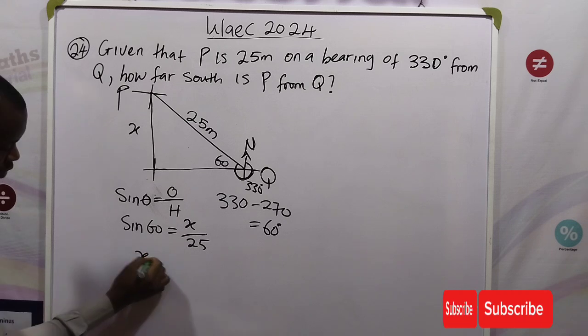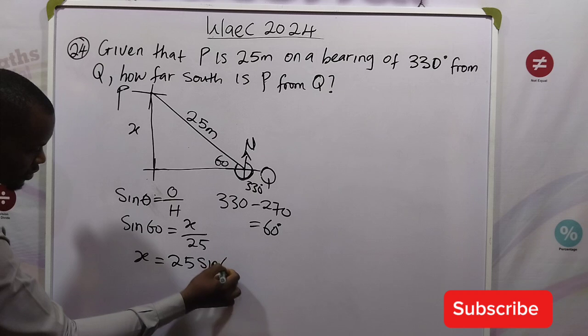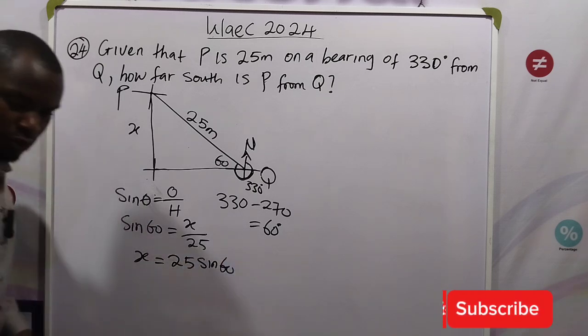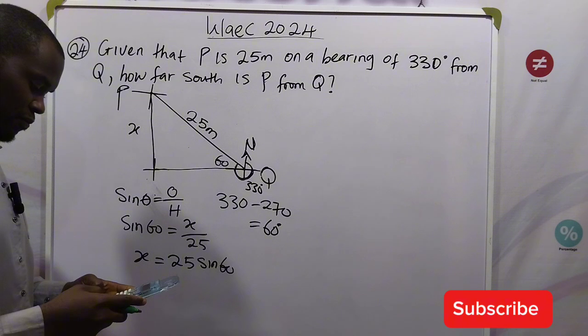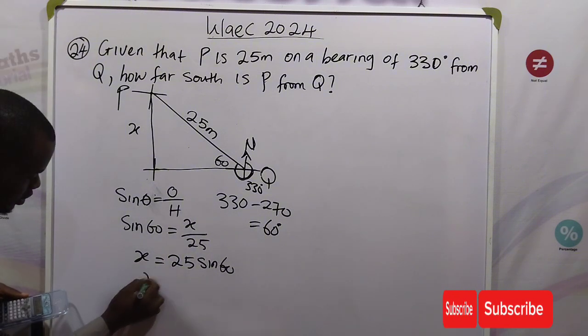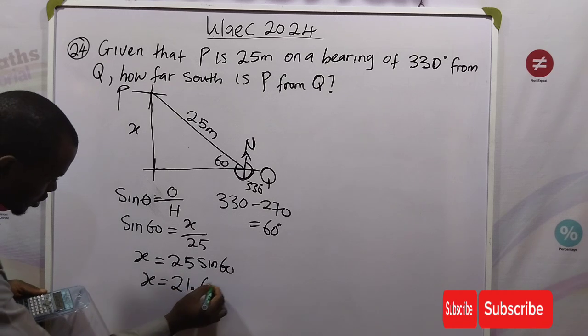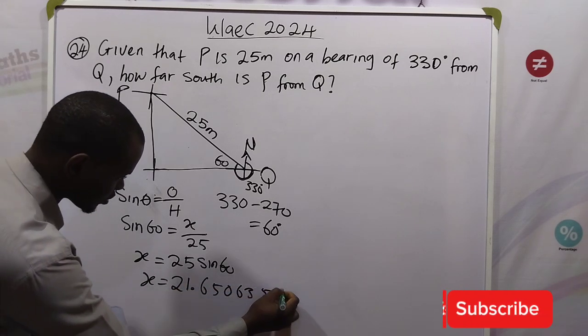So we have X to be equal to, cross multiply, 25 sine 60. So point your calculator straight and get your answer. 25 sine 60, that would give us X as 21.65063509.